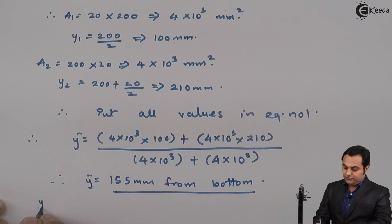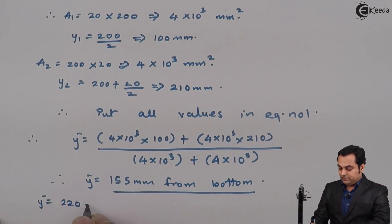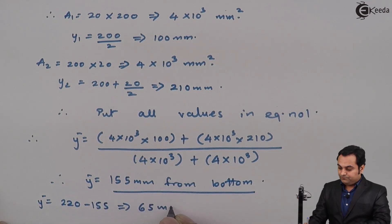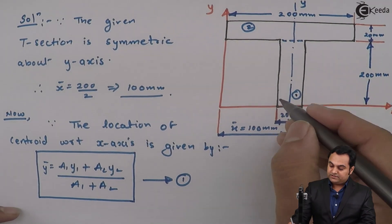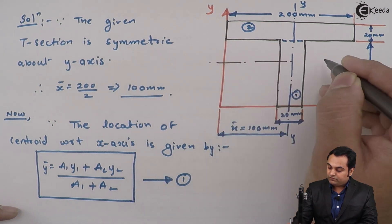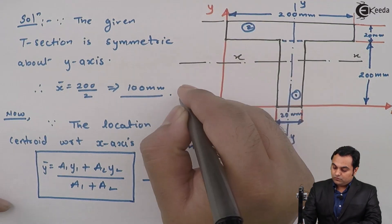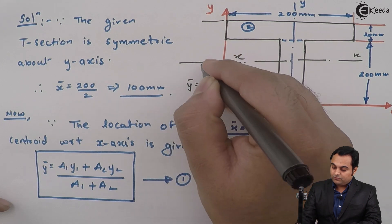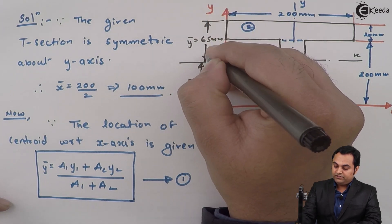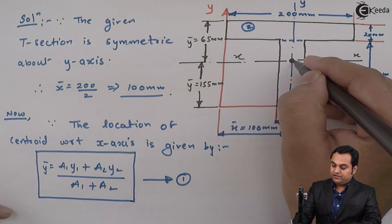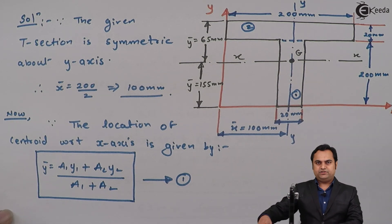From the top, the centroid is at 220 − 155 = 65 mm. So the centroid is located 155 mm from the bottom and 65 mm from the top. The x-axis of the T-section passes through this centroid, and we have now located both the x-axis and y-axis for the section.